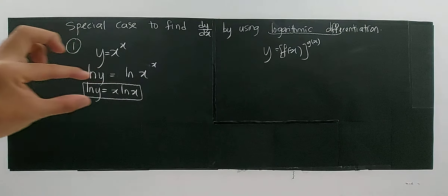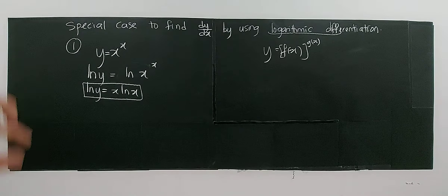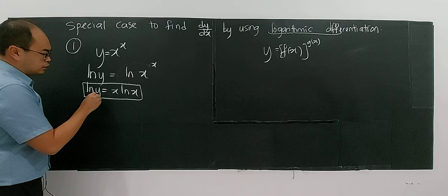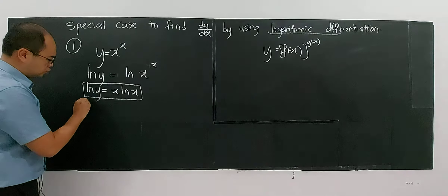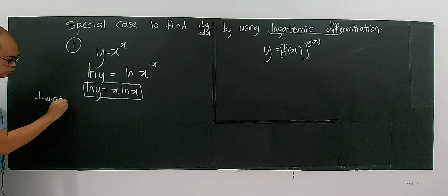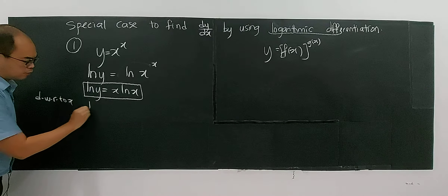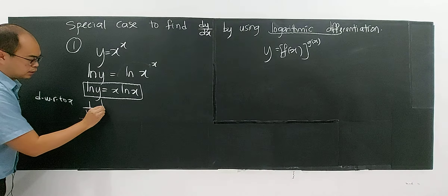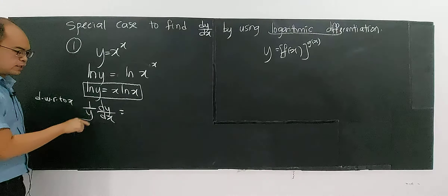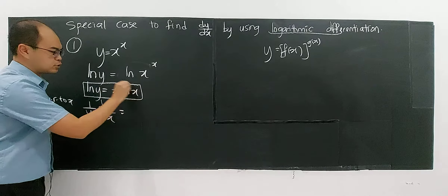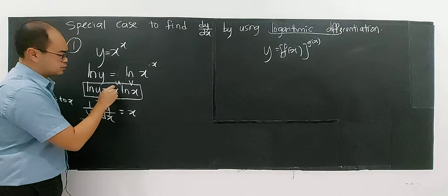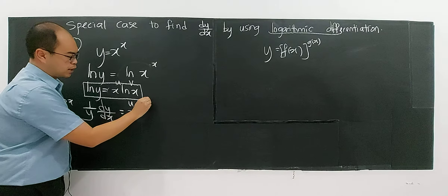That's why I named this a special case, for your extra knowledge. What is meant by logarithmic differentiation here? I will use the technique of taking ln of both sides. The purpose is so that I can bring down the x here so that I can differentiate. So ln y will become x·ln x by using the law of logarithms — I can bring the x down.